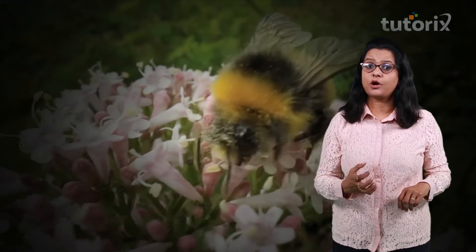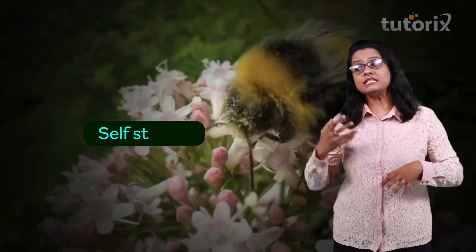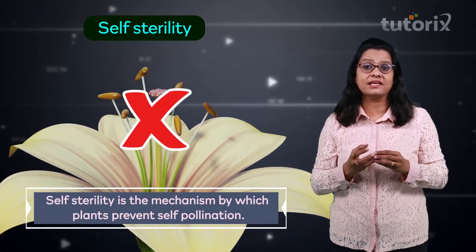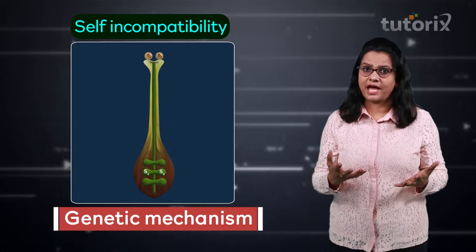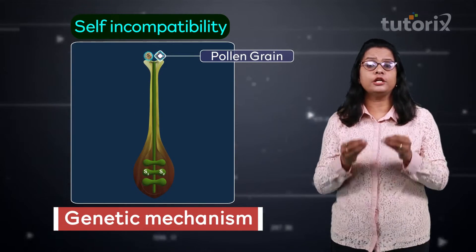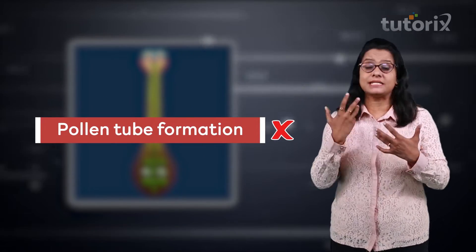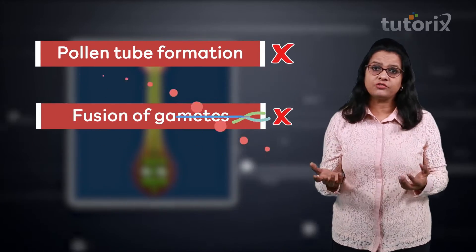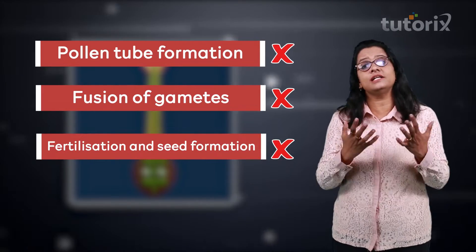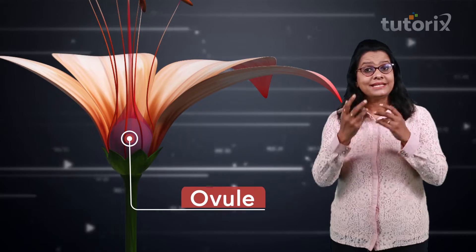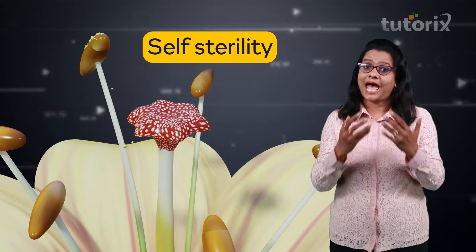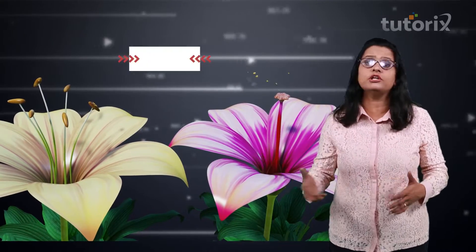A very important adaptation for cross-pollination is self-sterility or self-incompatibility. This is a genetic mechanism that prevents self-pollination — the pollen grain cannot germinate or is not effective on the stigma of the same flower, so the pollen tube is not formed or is inhibited. As a result, there is no fusion of gametes, no fertilization of the ovule, and no seed formation. Despite the pollen grains and ovule being viable, there is a genetic incompatibility between them, and thus cross-pollination is favored.